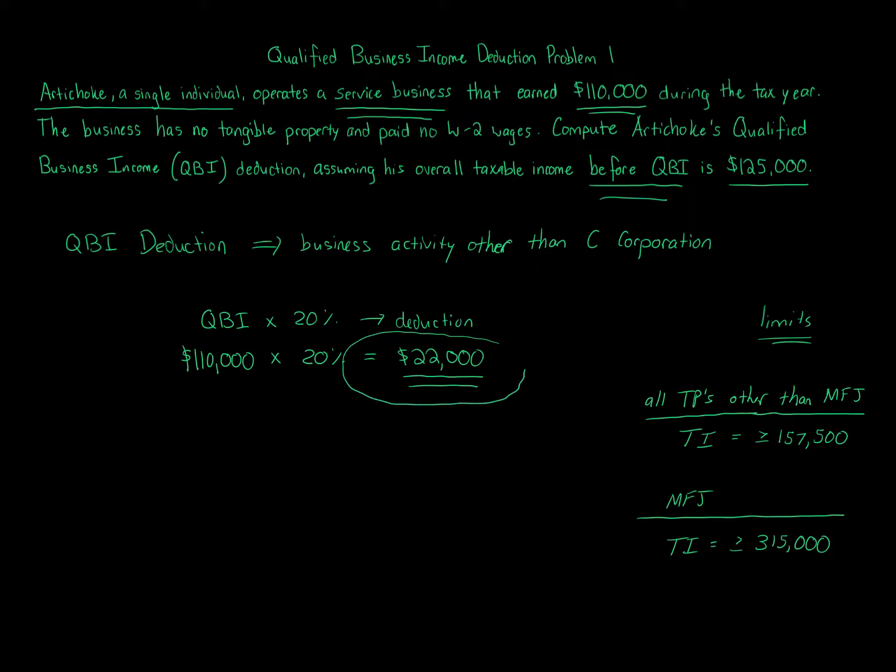Now, a few things before we conclude the problem. Remember, you've got these taxable income limits. Now, these numbers are inflation adjusted. So in the future, there will actually be more. So in my exams, my questions, I try to stay under the amounts. So you need to understand a few things.